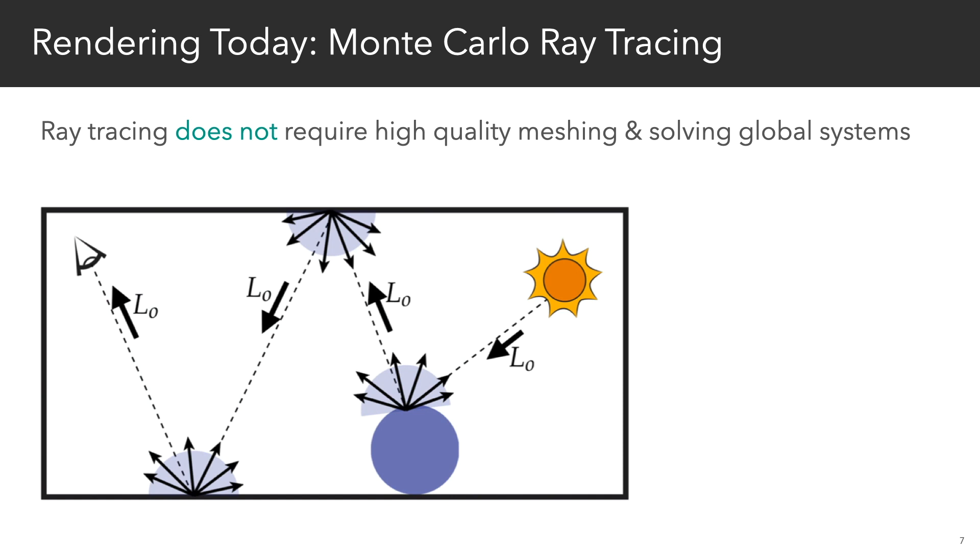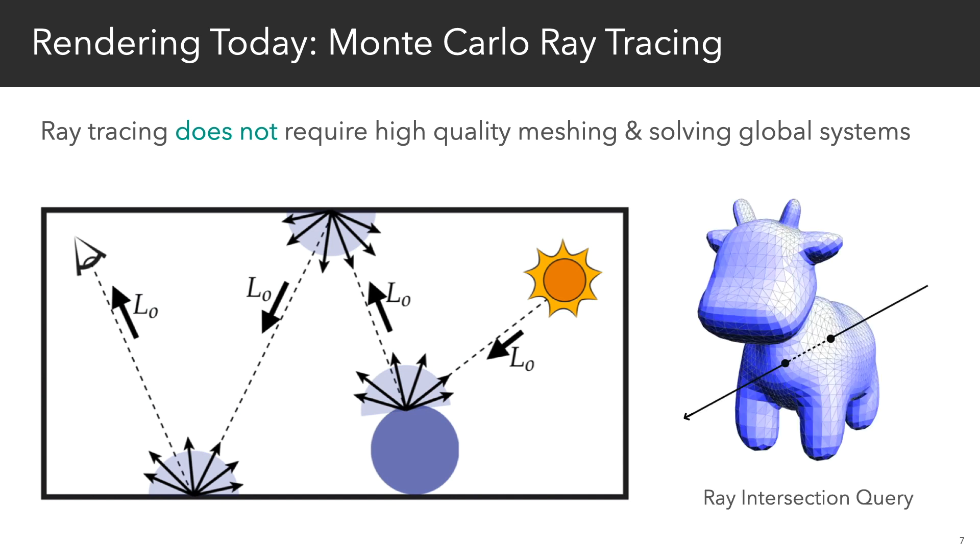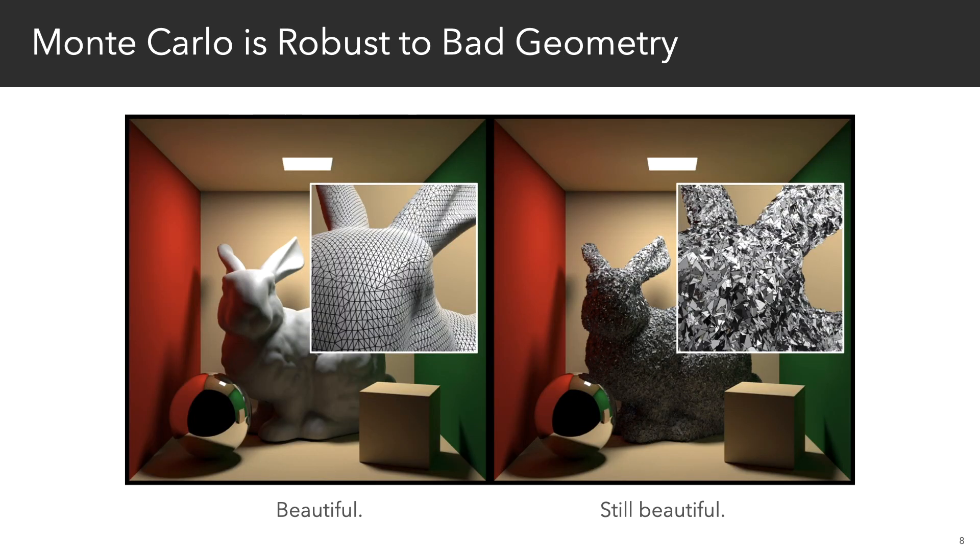In fact, ray tracing doesn't require any high-quality meshing or solving of global systems. The only geometric thing you need to be able to do is to intersect a ray with your scene.